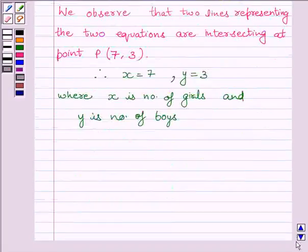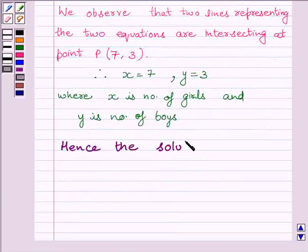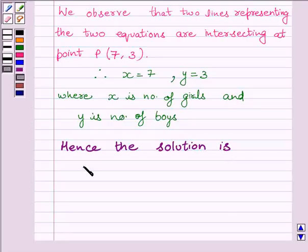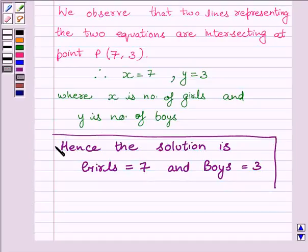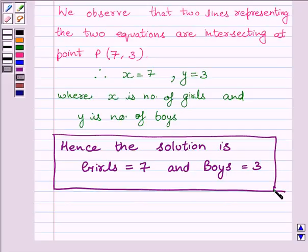Hence, the solution is: girls = 7 and boys = 3. This is our required answer. Hope you understood the session. Take care and goodbye.